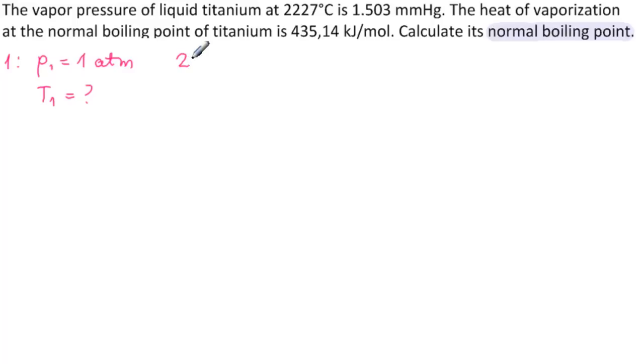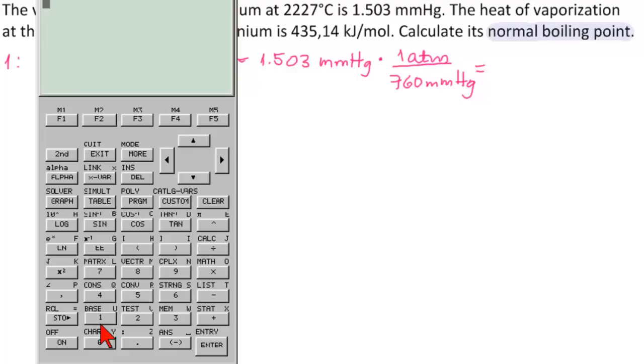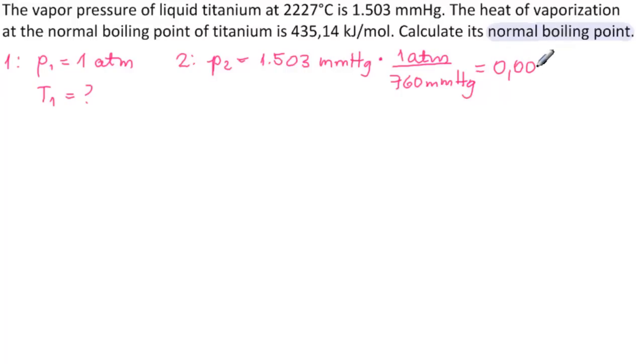And then for level two, P2 is equal to 1.503 millimeters mercury, which we need to transfer into atmospheres. So we multiply it by 1 atmosphere over 760 millimeters mercury. And taking down our calculator, and we have 1.503 divided by 760 equals 0.0019777.